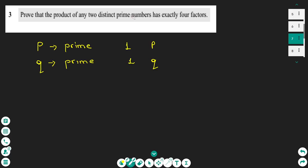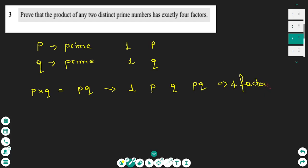We need to prove that the product of two prime numbers has four factors. If we multiply p times q, this gives us pq. The factors of pq are: 1, p, q, and pq. So in total we have four factors, and this proves the original statement. The product of two prime numbers has exactly four factors because each prime has only two factors.